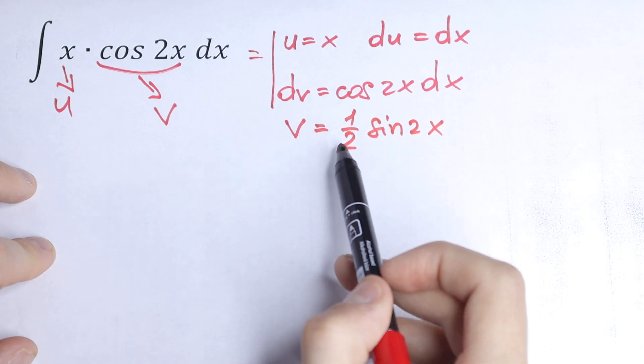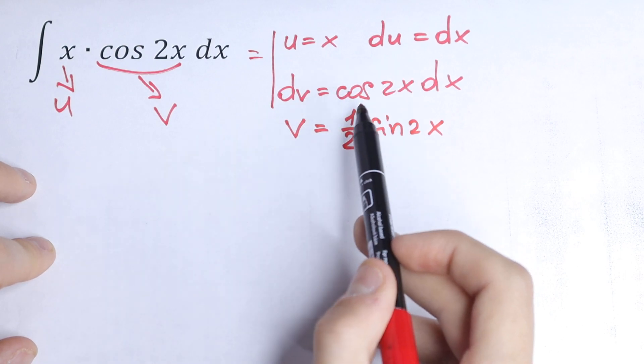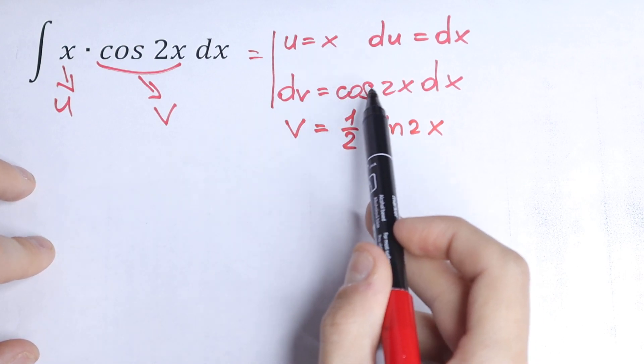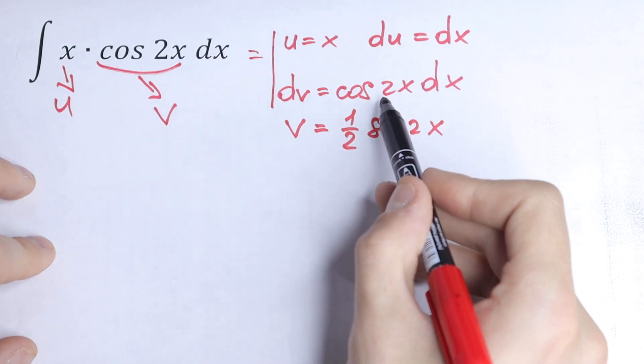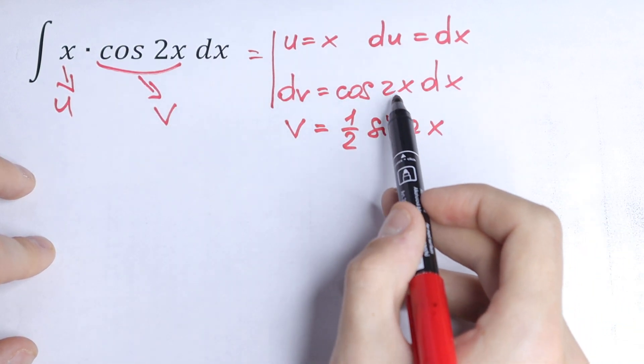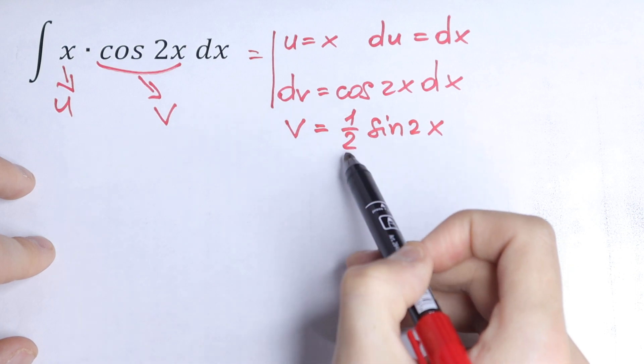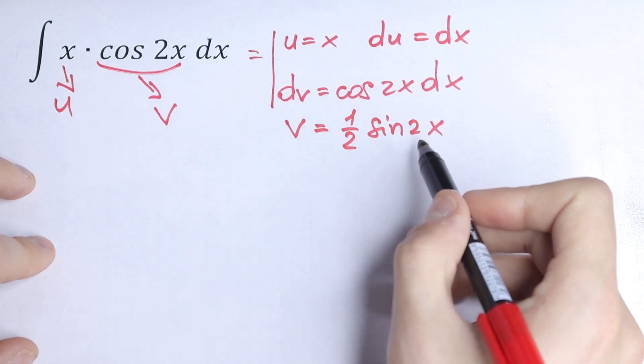Just put one-half before. If we integrate cosine x, the integral will be sine x. But we have 2x in our argument, so we need to write one-half before sine 2x.